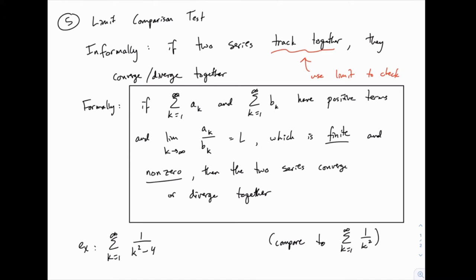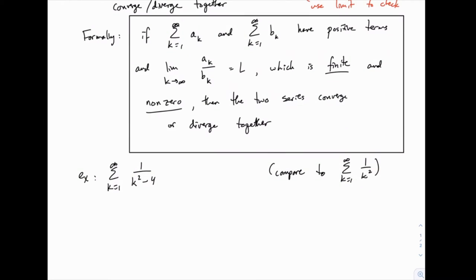Let's see that with the example we couldn't do with the direct comparison test: the series 1/(k²-4), which looks a lot like 1/k², just with that negative four included, which we don't think should change much. So 1/k² is a convergent p-series — we want the series we compare to be one we can find the answer for pretty easily, which is why we use p-series and geometric series generally speaking. In theory, you could compare to something you could solve with the integral test, but that would probably be more work.